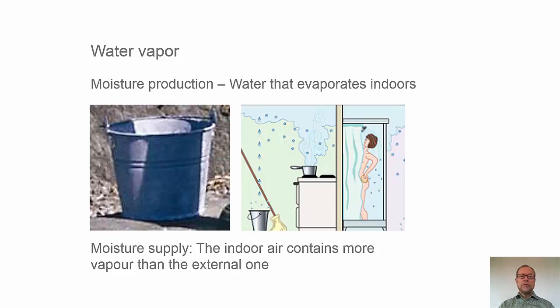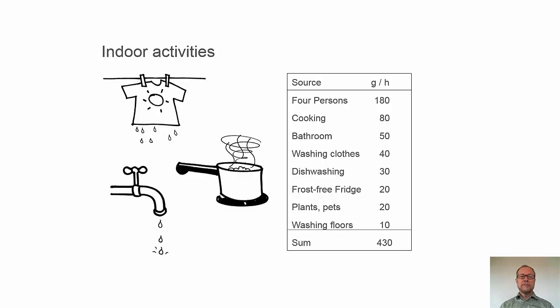We have the water vapor. Already in the outdoor air, we have water vapor, but we also have a production of moisture indoors, due to we are cleaning, and we are cooking, and with hygienic reasons, with plants and pets, and quite a lot of moisture is evaporating, the water is evaporating into the vapor.